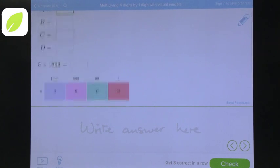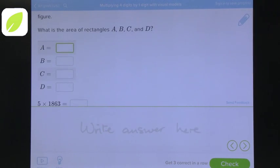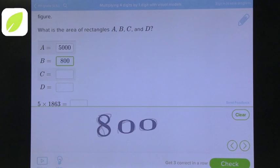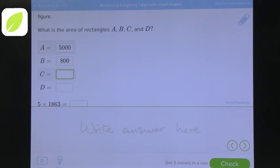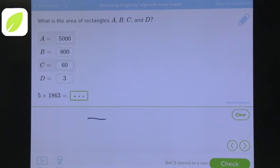The first one is A, and you can write the answer like this, so the input works very well. B would be 800, C would be 60, and D would be 3, and then the whole thing together is 5,863, and then you can check.